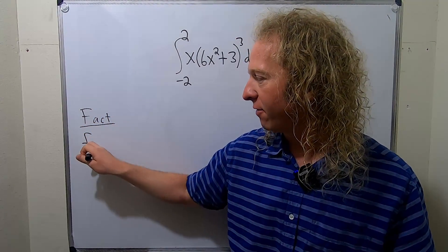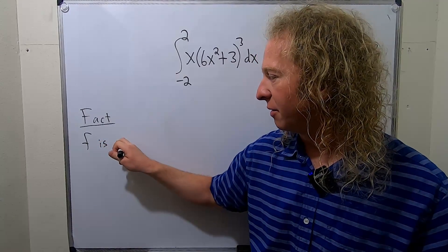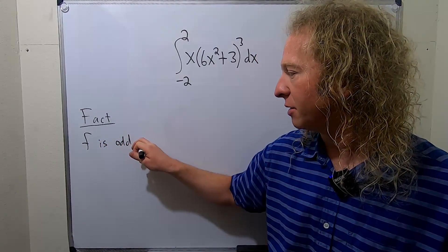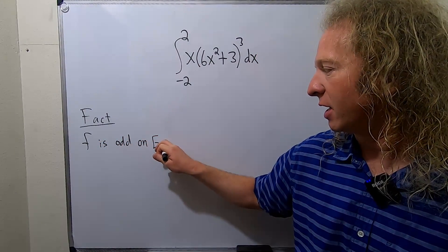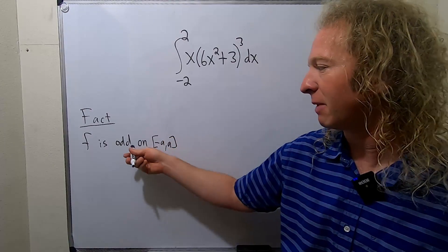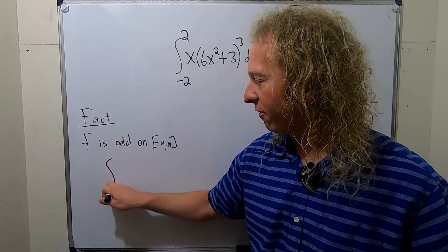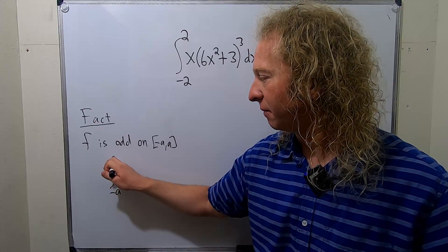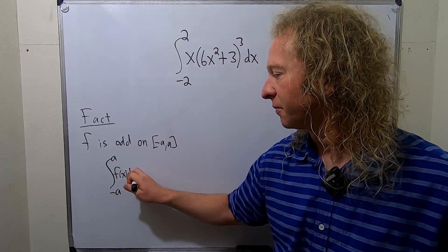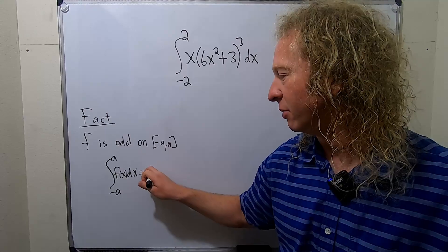If you have a function, so if f is odd on some interval negative a to a, we'll talk about what odd means in a second, and you integrate f from negative a to a with respect to x, you get zero.